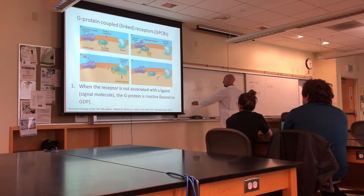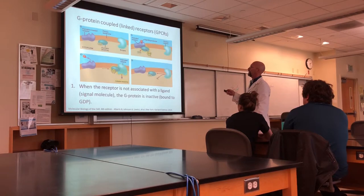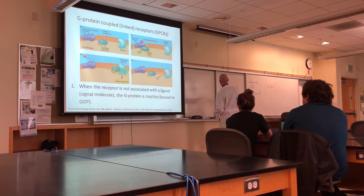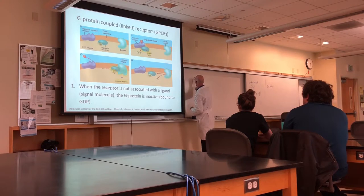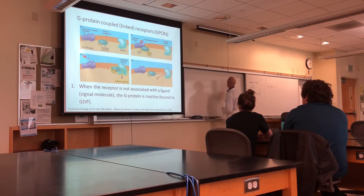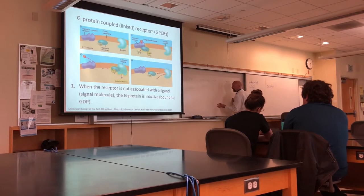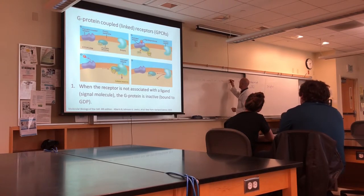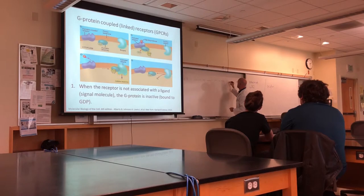In step one, the G-protein-coupled receptor is in its inactive state — it's not bound with a ligand. So the GPCR is inactive, there's no ligand bound. And the G-protein, when inactive, is bound to GDP.